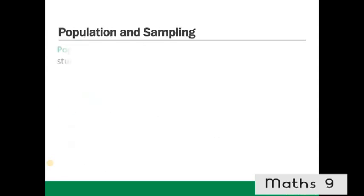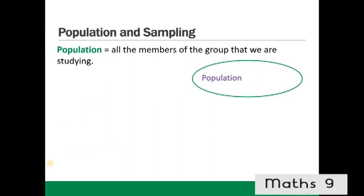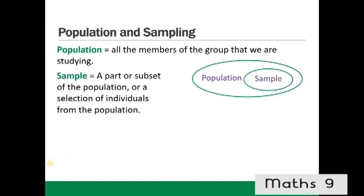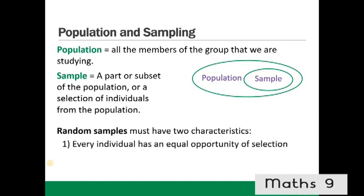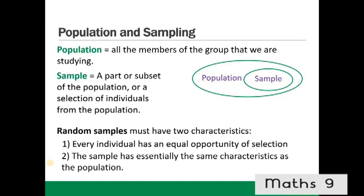Population and sampling. Population is all the members of the group that we are studying. A sample is a part or subset of the population. Random samples must have two characteristics: every individual has an equal opportunity of selection, and the sample has essentially the same characteristics as the population.